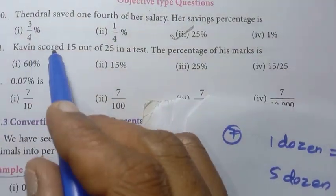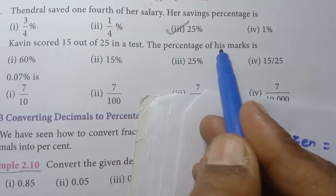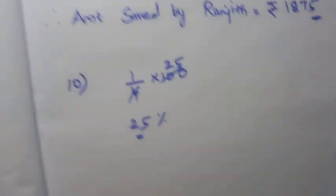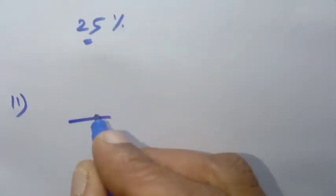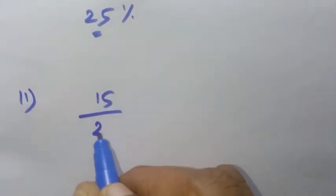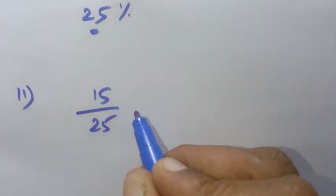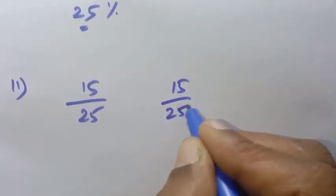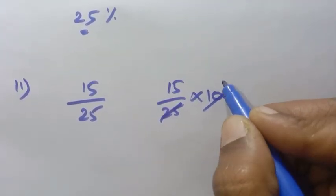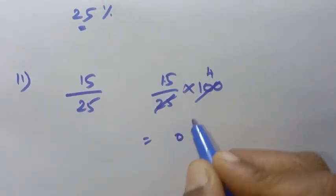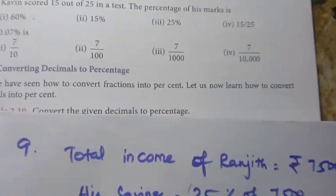11th question: Kavin scored 15 out of 25 in a test. The percentage of his mark is? Percentage equals 15 by 25 into 100. 25 goes into 100 four times. So 15 into 4 equals 60. Five fours are 20, four ones are 4, giving 60 percentage. So the first option is the answer.